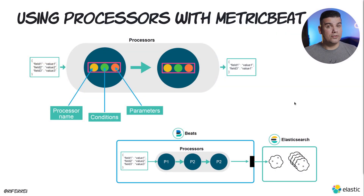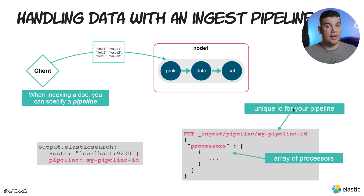The drawback of using processors is that you are not going to put this processing logic into a central location. You have to configure it on a per-deployment basis, which can be a little troublesome if you have hundreds of beats deployed in multiple locations. A way to overcome this limitation is leveraging an ingest pipeline.